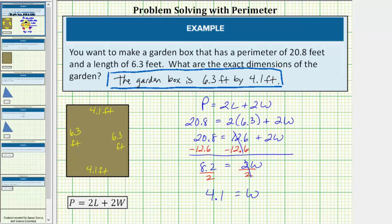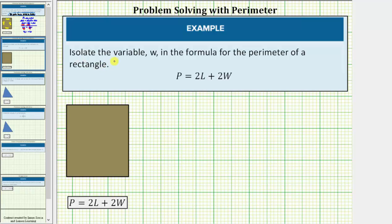Now let's look at a second related question. Here we're asked to isolate the variable w in the formula for the perimeter of a rectangle, which means you want to solve this equation for w. And we'll do this just like we solved the previous equation for w.